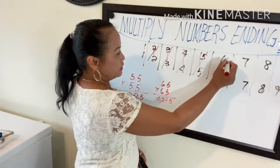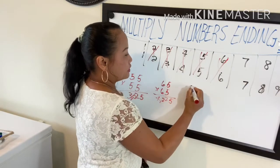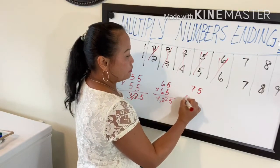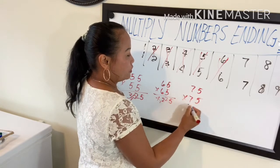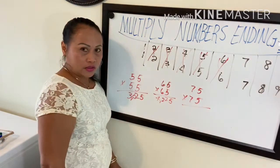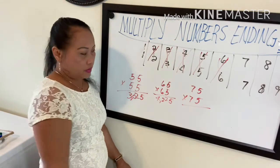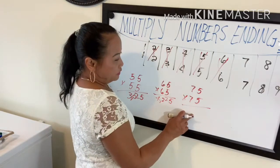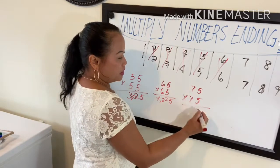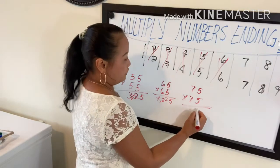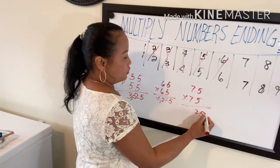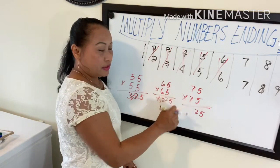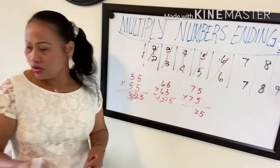Next, 75 times 75. As long as the last two numbers are five, you can always apply this. Five times five is 25, add one to seven — seven becomes eight — and eight times seven is 56. The answer is 5625.